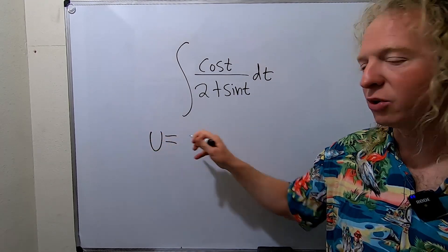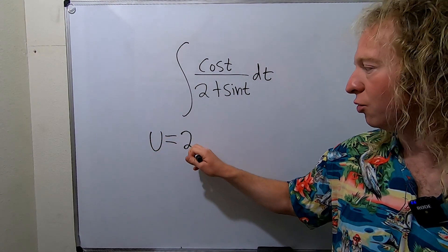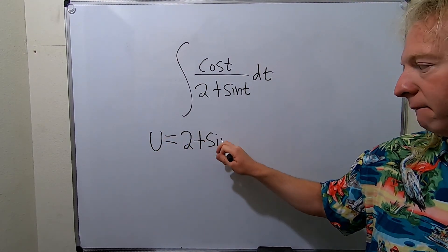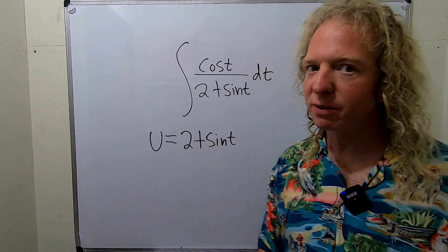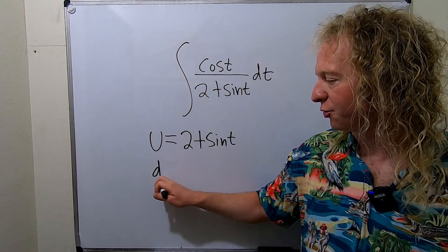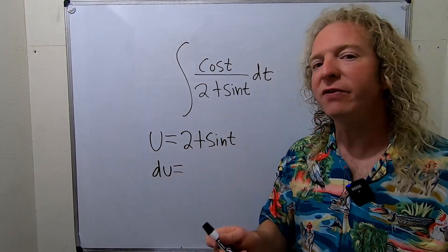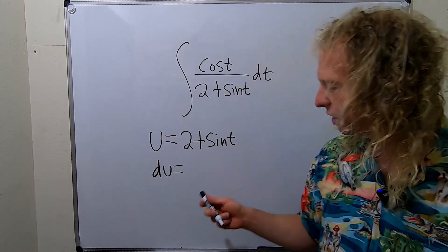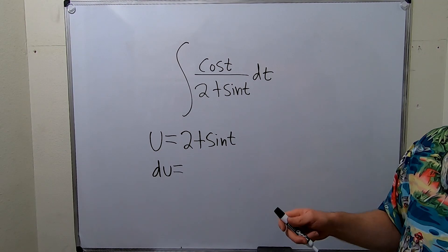So we'll start by letting u be equal to the bottom piece. So 2 plus sine t. Now we're going to compute du. So du is the derivative of u. The derivative of 2 is 0. The derivative of sine is cosine.